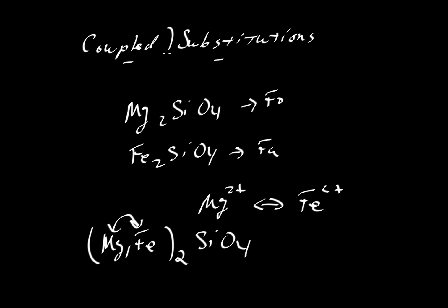So coupled substitution means something else. That means we're going to take atoms that come in pairs. So let's say we have the mineral diopside, CaMgSi2O6, and so that is diopside.